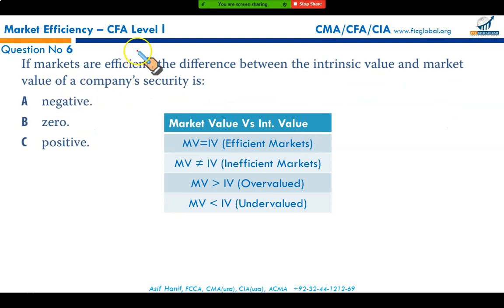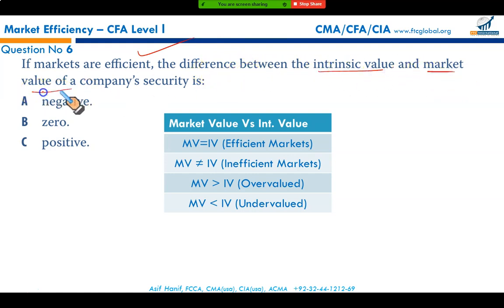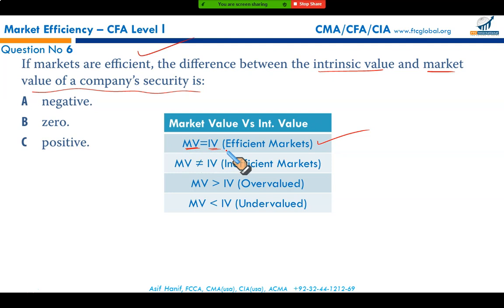If markets are efficient, the difference between the intrinsic value and the market value of a company's security is zero. In an efficient market, the market value and intrinsic value should be the same, so the difference between the two must be zero. That makes option B the correct answer.